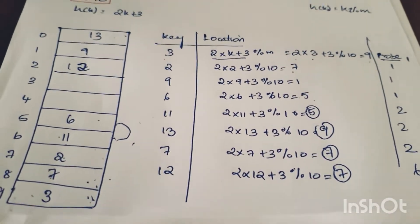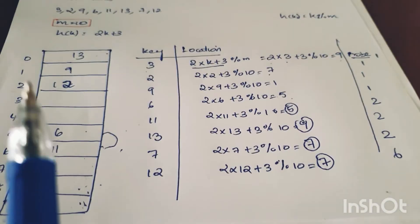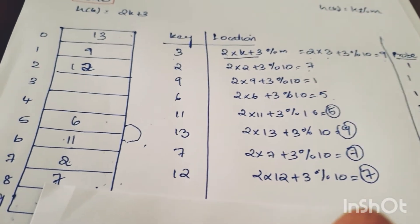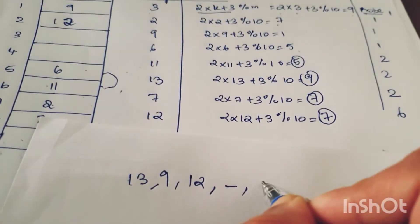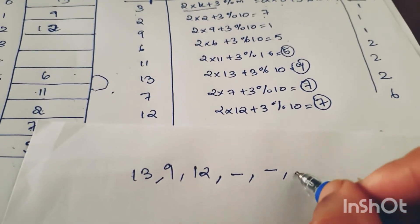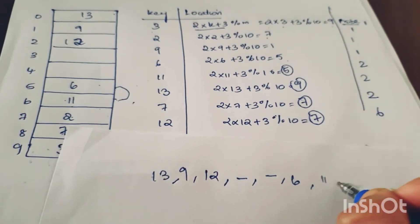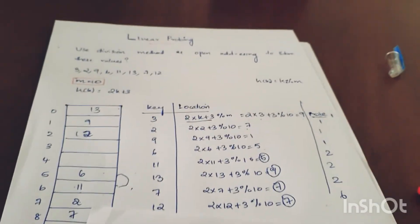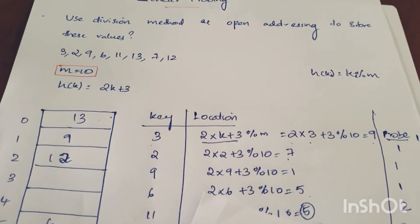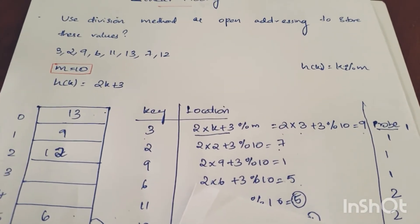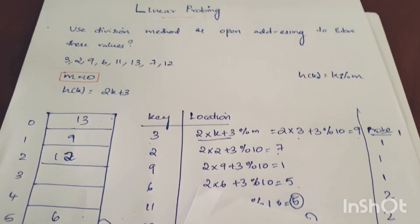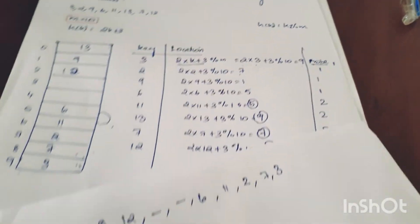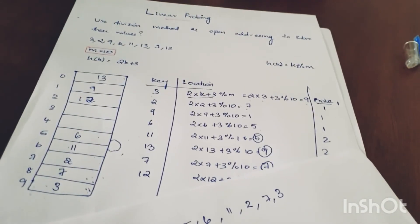Now let's see the order written in this hashtable. The first element is 13, the next is 9, then 12. The next element is 6, then 11, then 2, then 7, then 3. This is the order of the linear probing result. This concludes Linear Probing. Next, we will cover Quadratic Probing and Double Hashing.